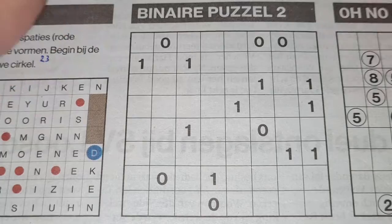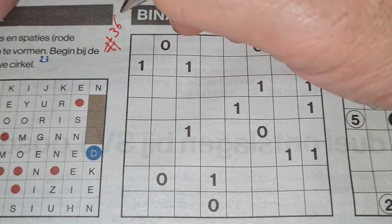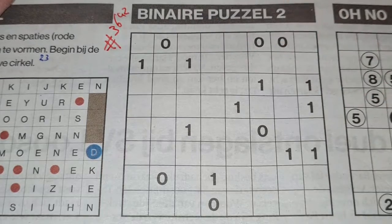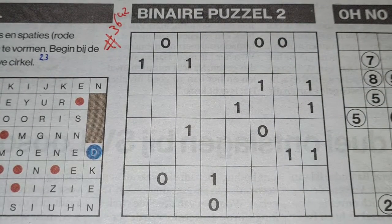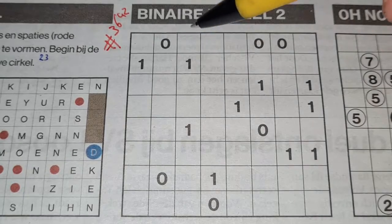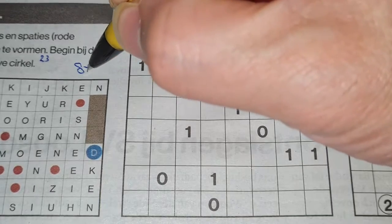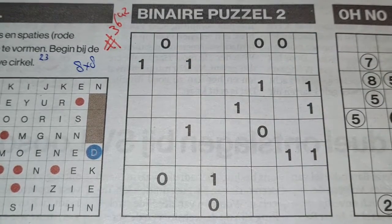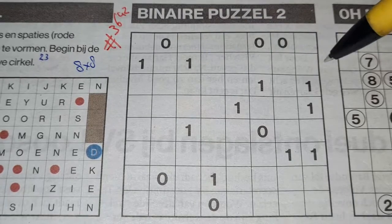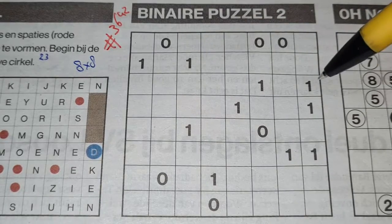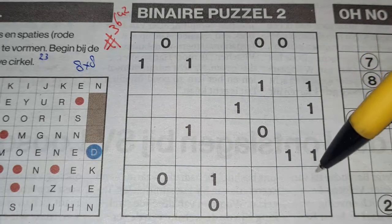Binary puzzle number 364236-42. And what kind of binary puzzle is this one? Let me count: one, two, three, four, five, six, seven, eight — it's an eight by eight binary puzzle. That means that in a row or in a column there are always four ones and four O's.